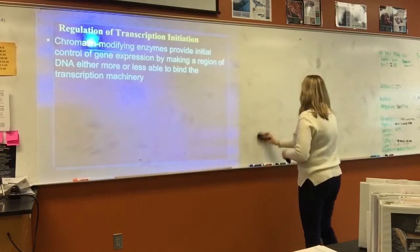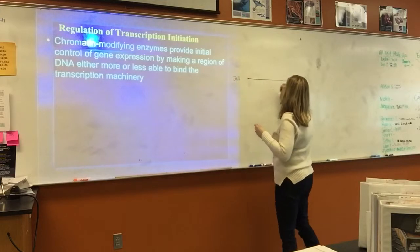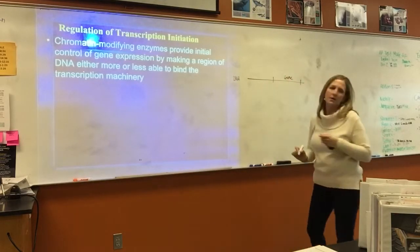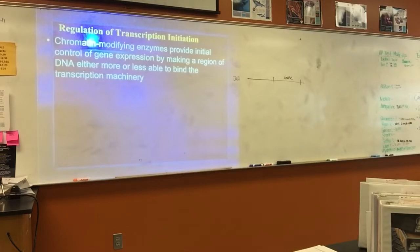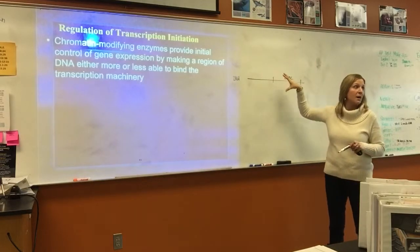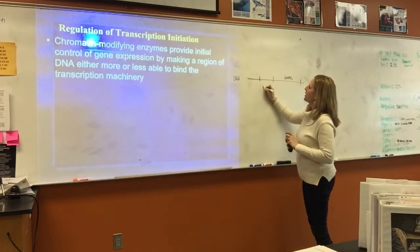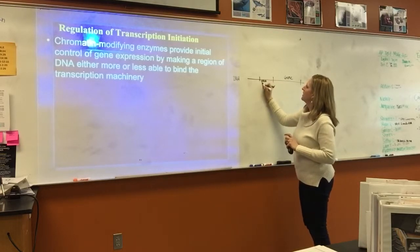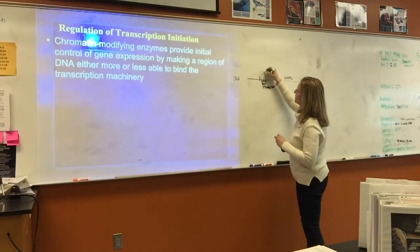Chromatin-modifying enzymes provide initial control of gene expression by making a region of DNA either more or less able to bind to the transcription machinery. You have a DNA molecule and here's your gene to be transcribed. What needs to happen for transcription to occur? RNA polymerase needs to bind. RNA polymerase is going to be used to make the mRNA. How does RNA polymerase know where to bind? Here we have the promoter region — part of that promoter region is the TATA box — and then transcription factors bind, and that's how RNA polymerase knows where to bind.